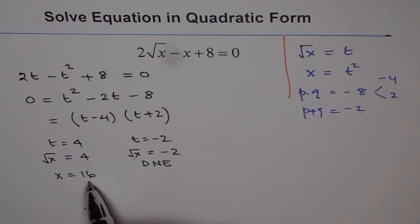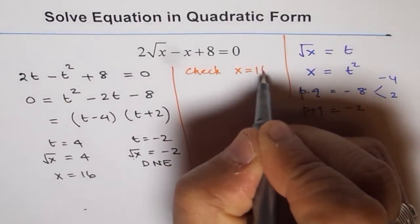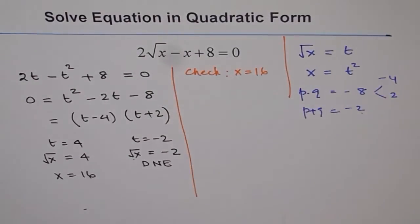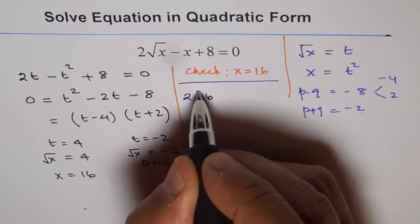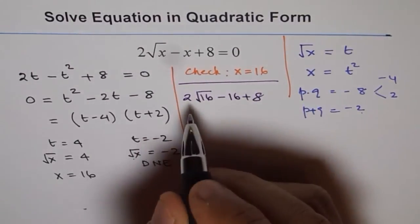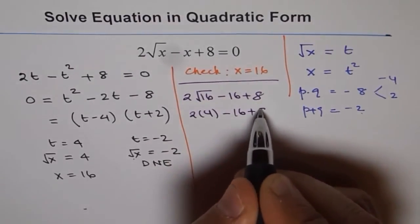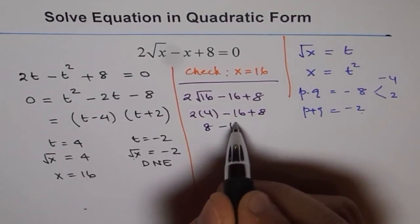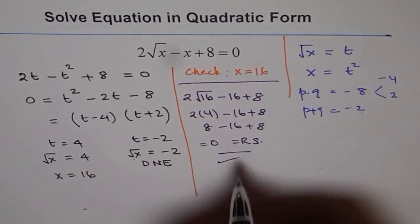But let's try it out whether it works or not. So if I substitute x as 16 in my equation, what do I get? So we'll check x equals to 16, right? So let's do it and see what do we get. So we get 2 square root of 16 minus 16 plus 8. Square root of 16 is 4, right? So we get 2 times 4 minus 16 plus 8. 2 times 4 is 8. So we get 8 minus 16 plus 8, which is equals to 0, which is the right side, right? So therefore this solution is correct.